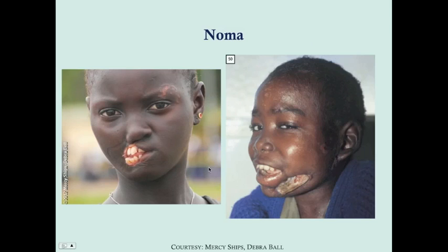This is an example of Noma — it starts in the inner mouth and works its way outward. You can see this patient had surgery done, and you can see the surgical scar.